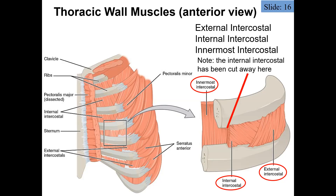Think about being in respiratory distress — you recruit these intercostal muscles. Whereas during normal, quiet breathing, you're really relying on your diaphragm.